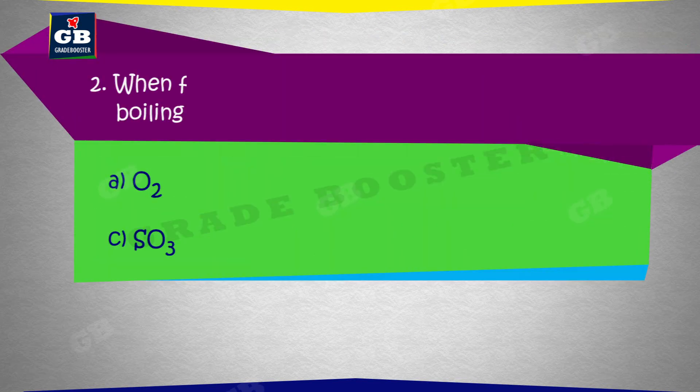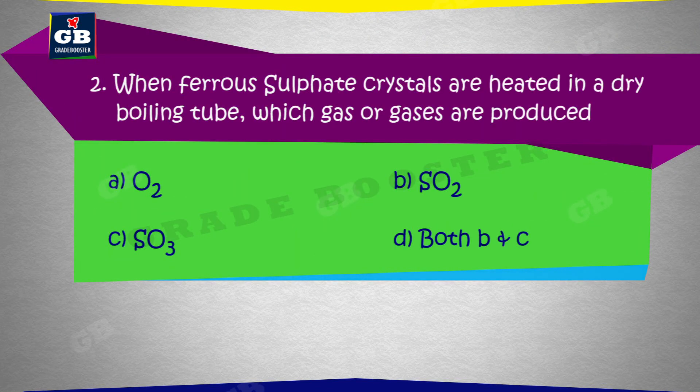When ferrous sulfate crystals are heated in a dry boiling tube, which gas or gases are produced? A. Oxygen, B. Sulfur Dioxide, C. Sulfur Trioxide, D. Both B and C.